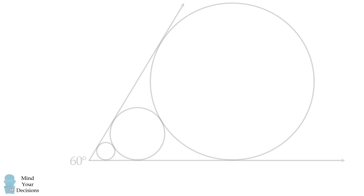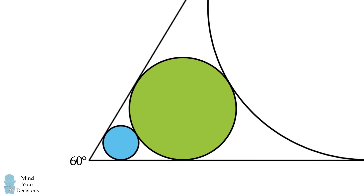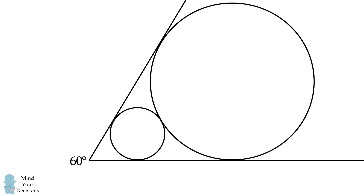Now let's solve the problem. To make things a little bit easier to see, let's zoom in on these two smallest circles. In the first circle, construct one radius to one point of tangency. This circle has a radius equal to 1. Now construct another radius to the other point of tangency. Then connect the vertex of the rays to the center of the small circle. We have now constructed two congruent right angle triangles. This means the center line bisects the angle between the rays, meaning each of these angles is equal to 30 degrees.